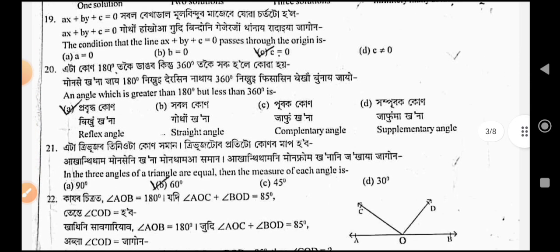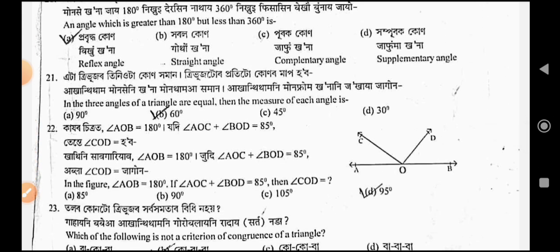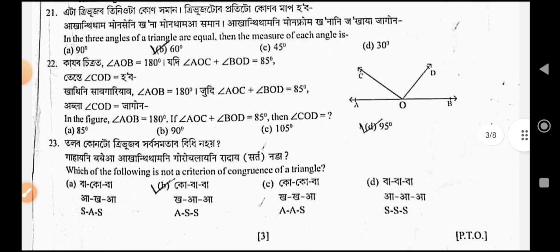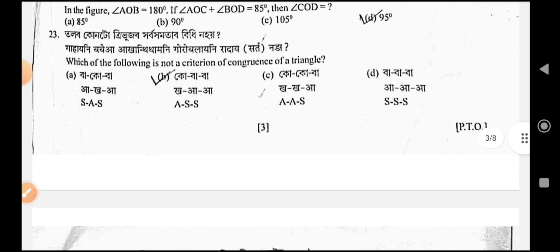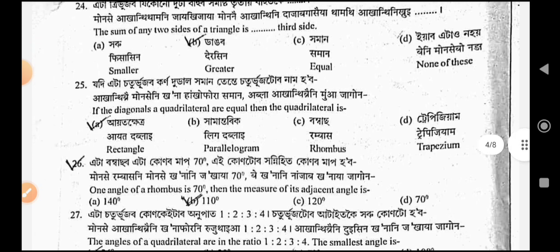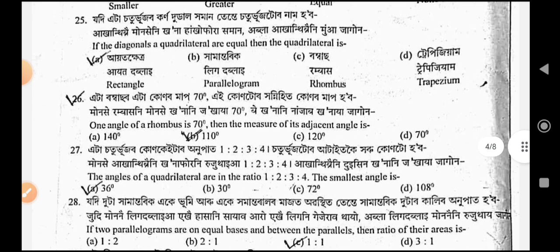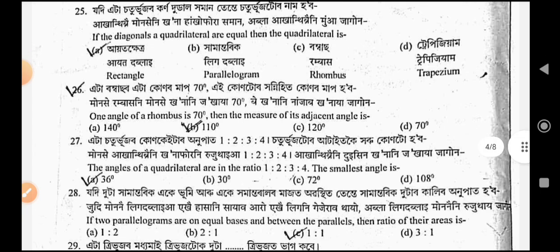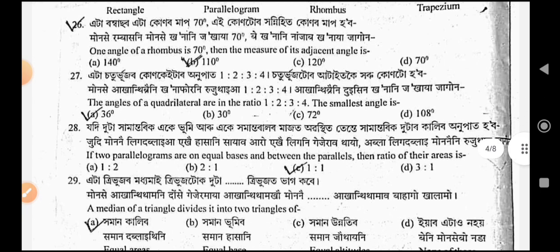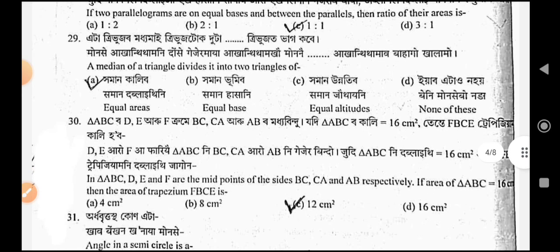Question 21, option B. Question 22, option D. Question 23, option B. Question 24, option B. Question 25, option A. Question 26, option B. Question 27, option A. Next question 28, option C. Question 29, option A. Question number 30, option C.